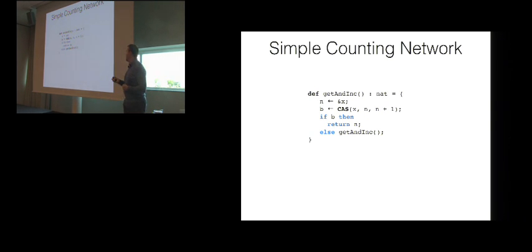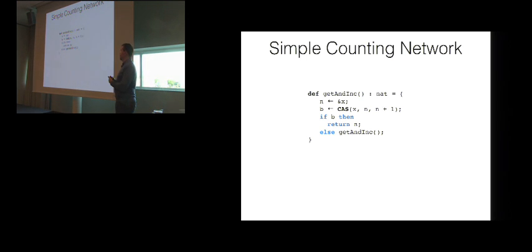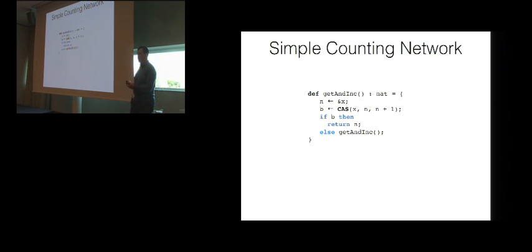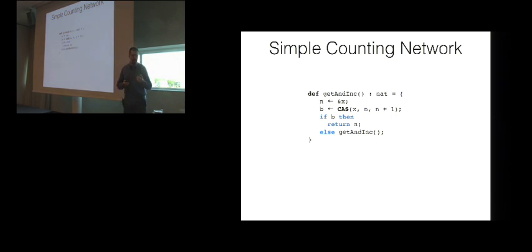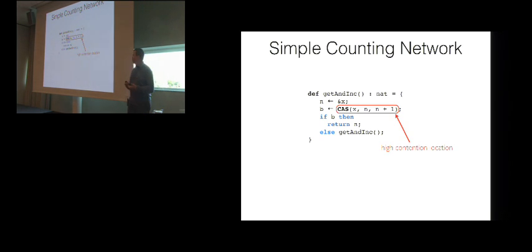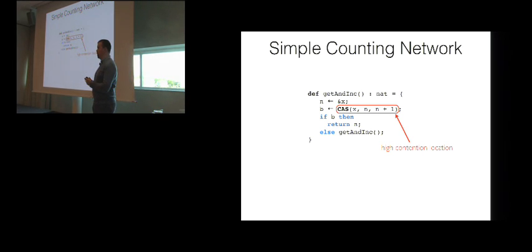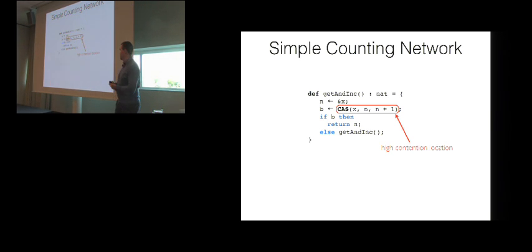Assuming X is the pointer storing the value of our counter, what the thread tries to do is a compare-and-swap operation, installing the incremented value into this memory cell. If it succeeds, the value has been successfully installed and can be returned. Otherwise, the whole procedure repeats recursively. The problem with this procedure — which is correct — is that we have this performance bottleneck caused by the compare-and-swap instruction. This is the point of the program which many threads will be trying to execute, and most of them will be failing in the presence of high contention.